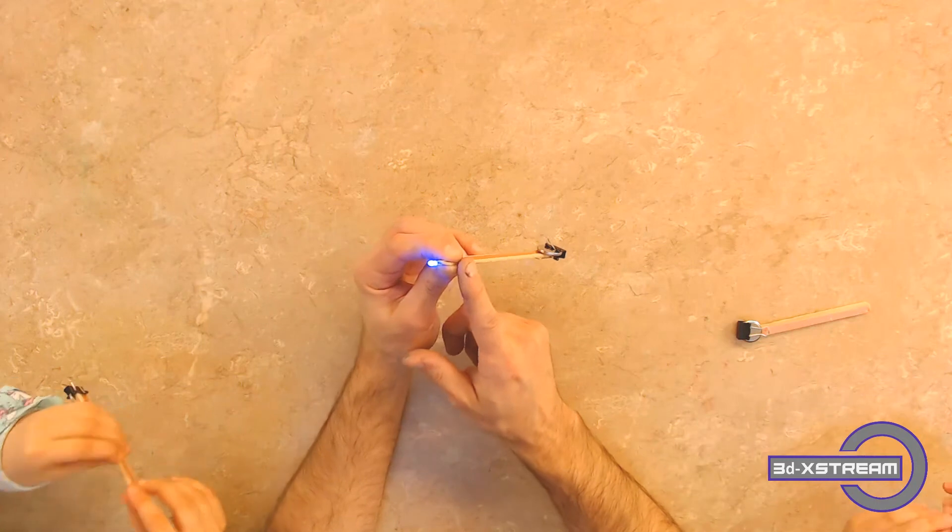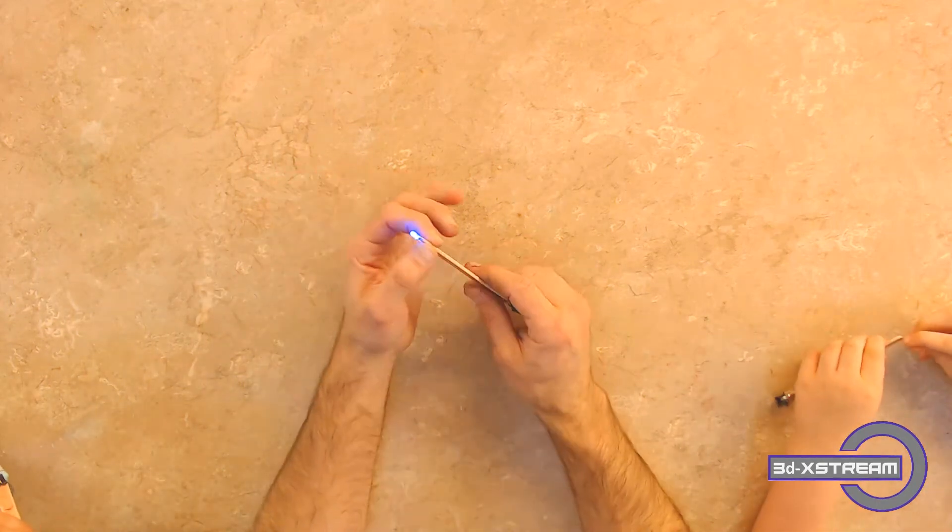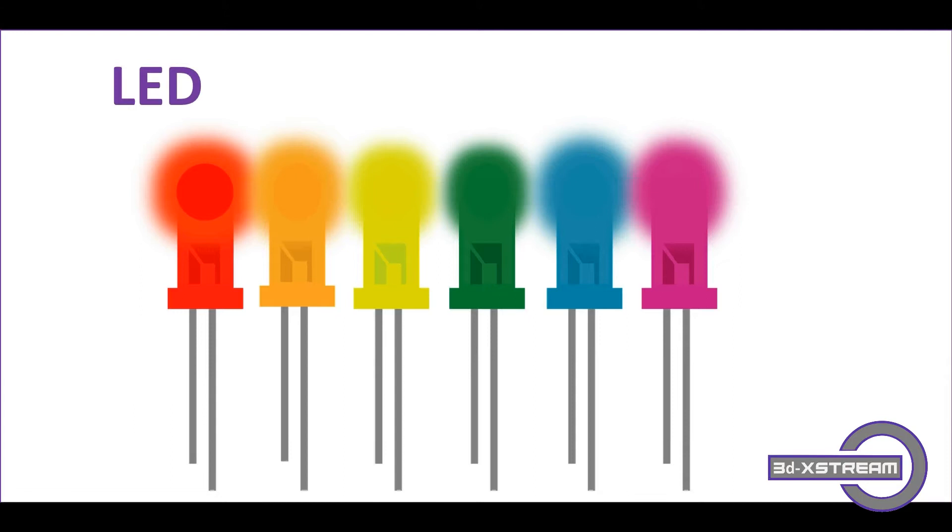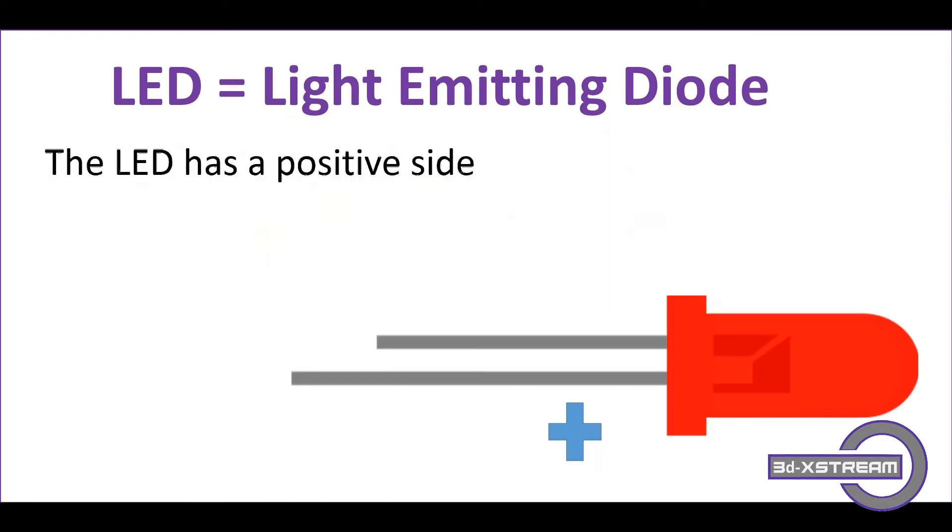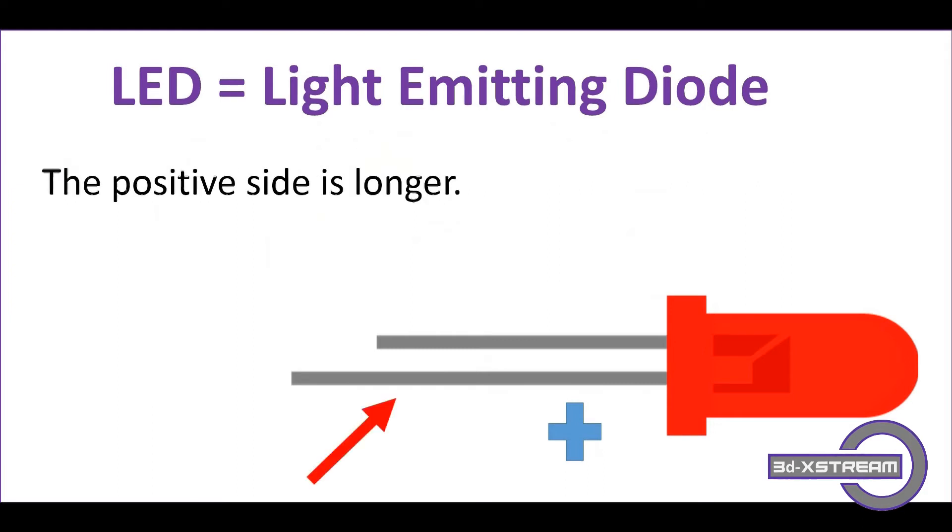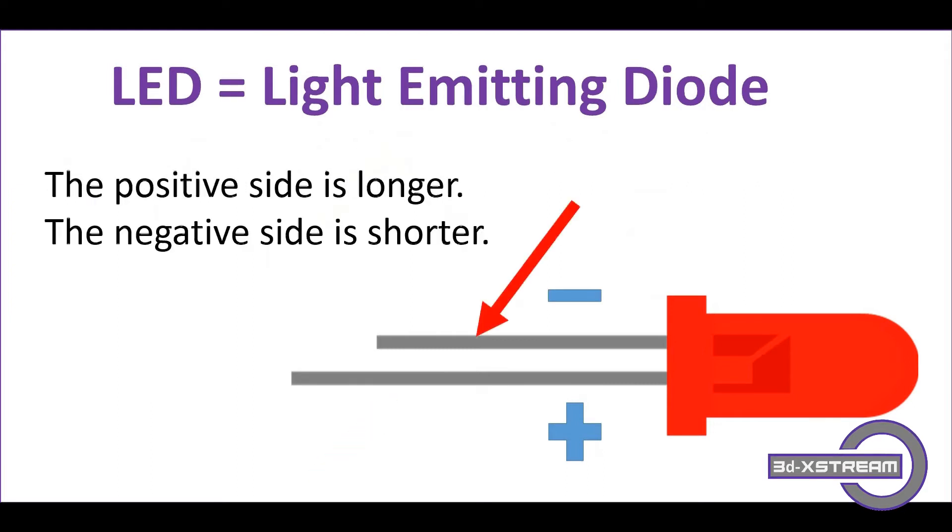You have a power source going up the path that the electric current flows through to light up your LED. LED stands for light emitting diode. The LED light has a positive side and a negative side - the positive leg is longer than the negative side.